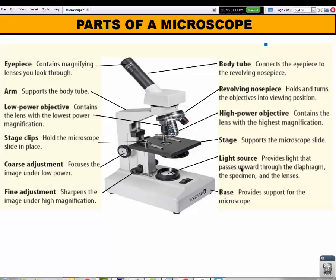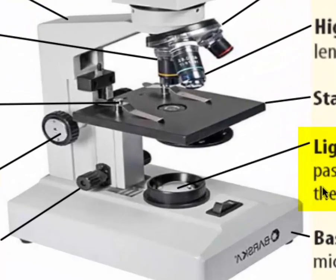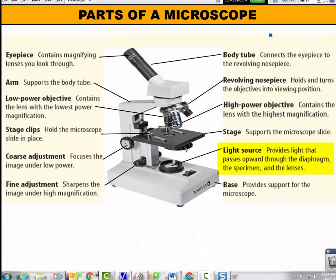The last two pieces that we have is the light source. The light source is the source that provides the light, so we can illuminate and see the specimen. So the light will pass through the light source and through the hole in the stage right through the slide. And this allows us to see it. And then lastly we have the base, which is just the wide bottom of the microscope to give it stability and support. So those are the different parts and functions of the microscope.